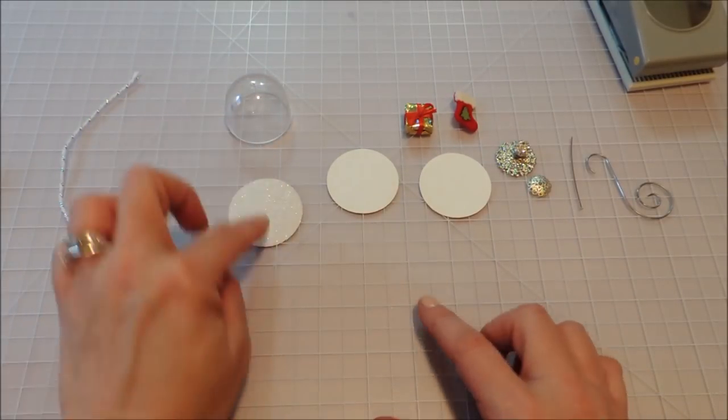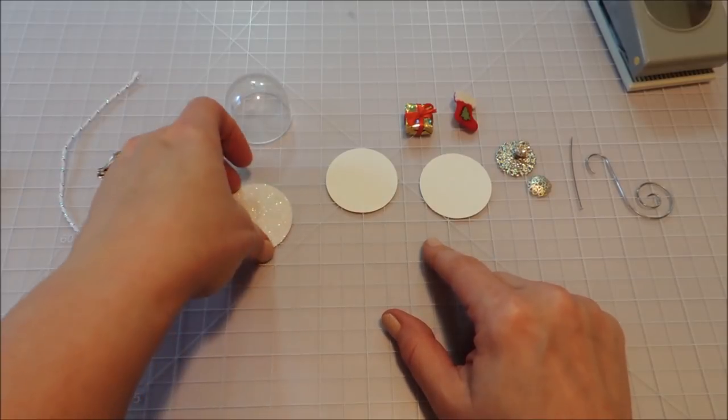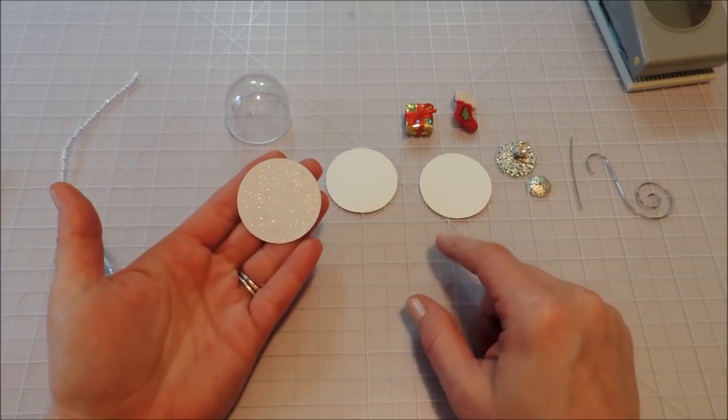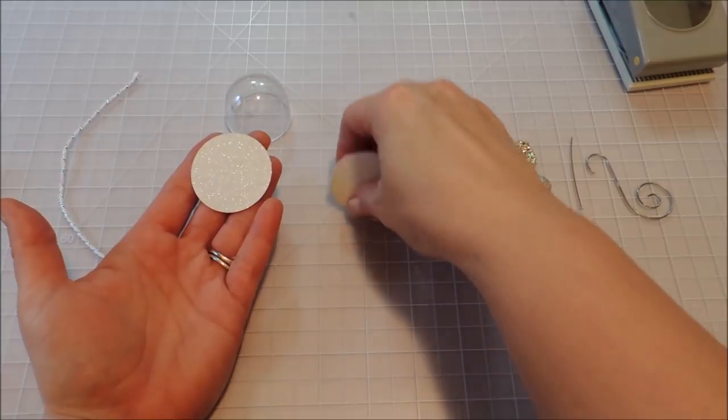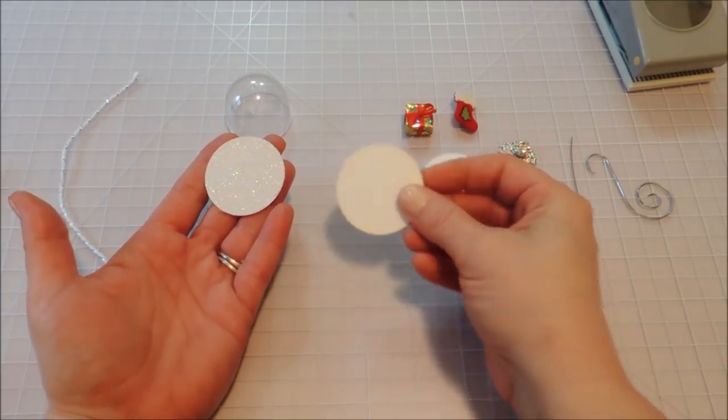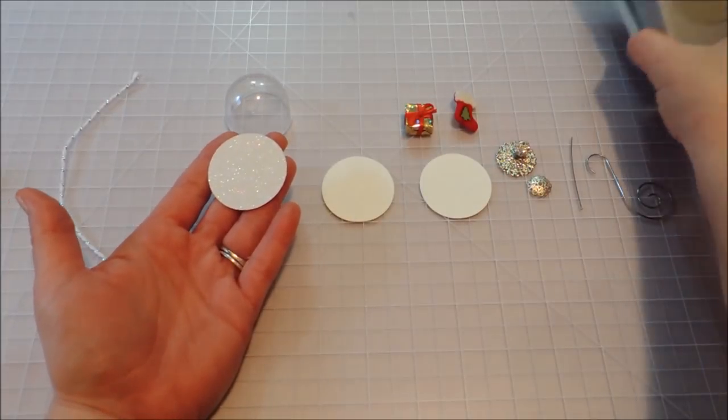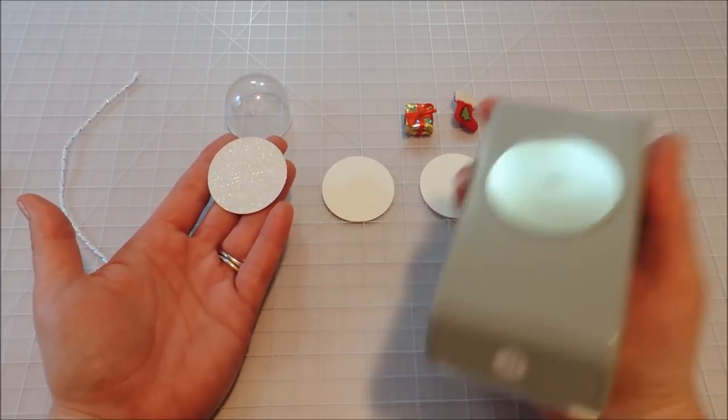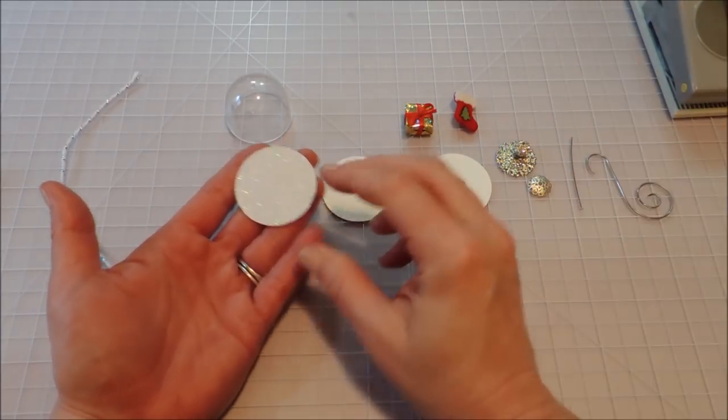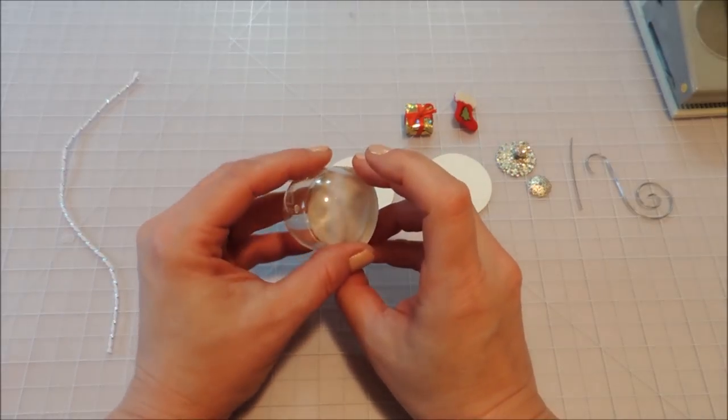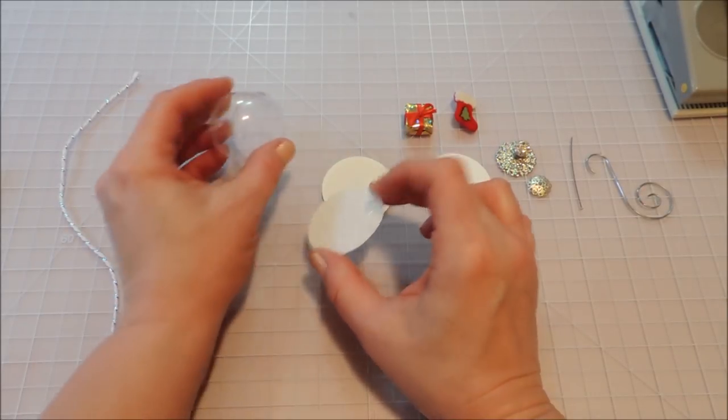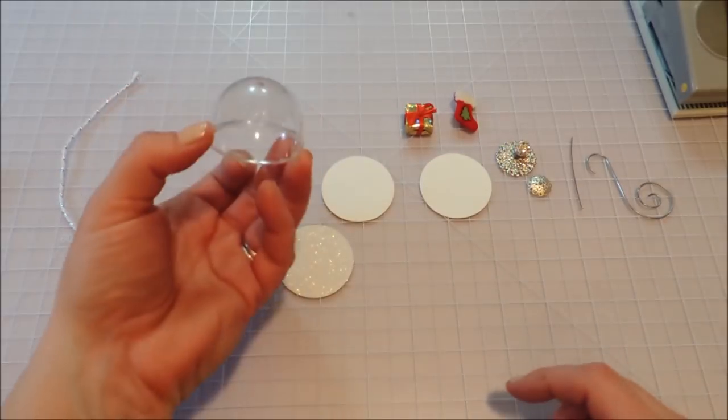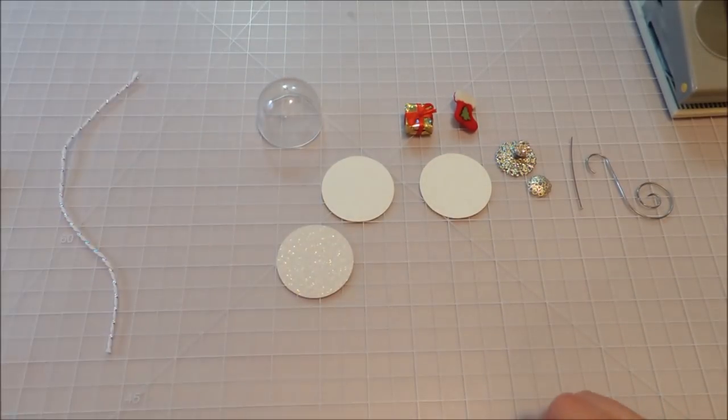Then I've got three circles here that's going to be the bottom. I cut one out of glitter cardstock and two out of heavy watercolor paper, and we're going to layer those all together. I did those with the one and three-fourths inch circle punch because that's what fits my little dome here. If you're using a different size one, just find what size circle fits yours.